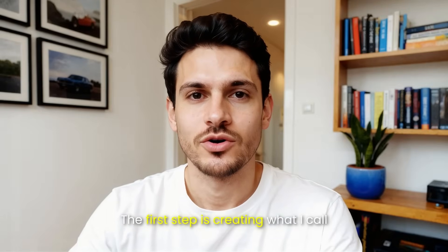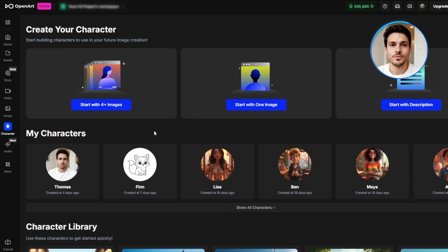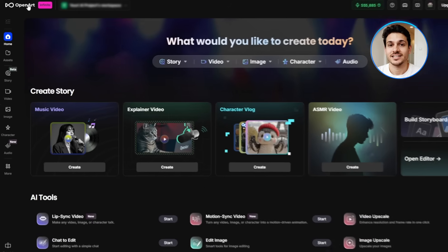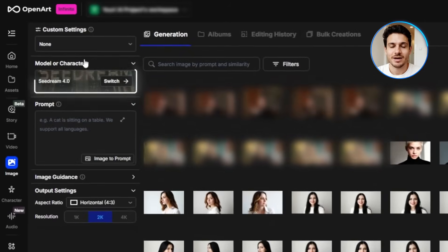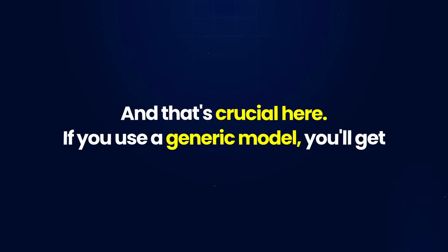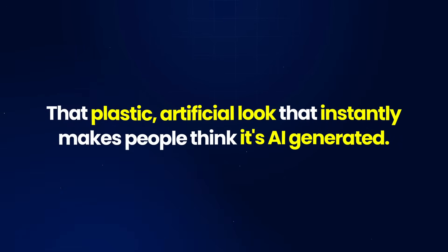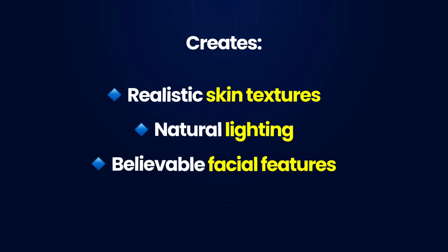The first step is creating what I call the foundation image. This is the single most important image in your entire character library because your character will be based on it. Go back to the main OpenArt homepage and click on Image on the left side. This opens the image generation workflow. In the model selector at the top, click switch and choose OpenArt Photorealistic. This model is specifically designed for creating natural, lifelike faces, and that's crucial here. If you use a generic model, you'll get that plastic, artificial look that instantly makes people think it's AI generated.